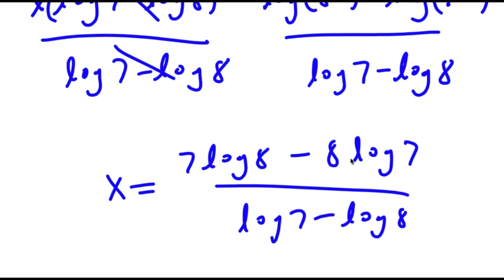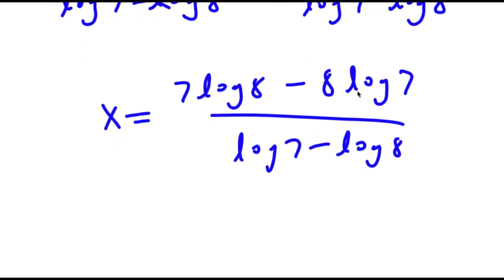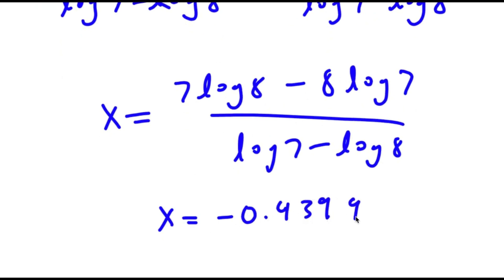From here, if you plug in all the values of log 8 and log 7 into the equation, you get x is equal to negative 0.4399.